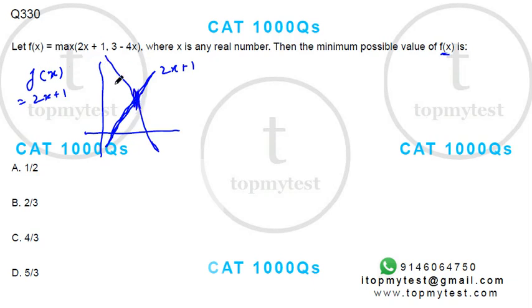So beyond the meeting point, on the left of the meeting point, this portion will be higher, so it will take these values. On the right of the meeting point, this will be higher, so it will take these values.